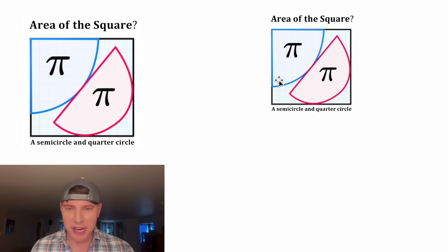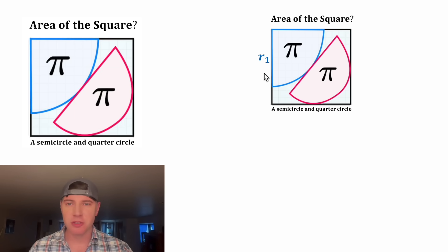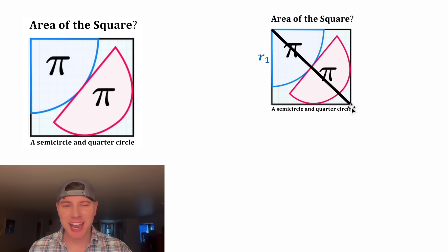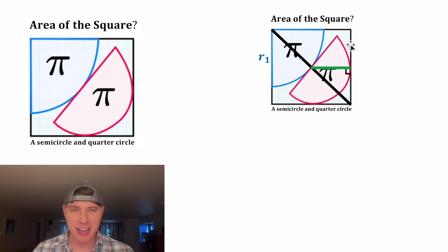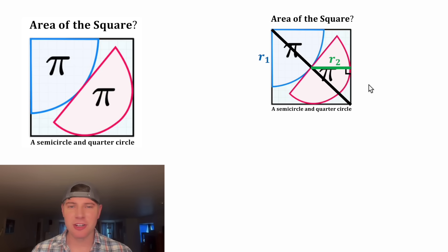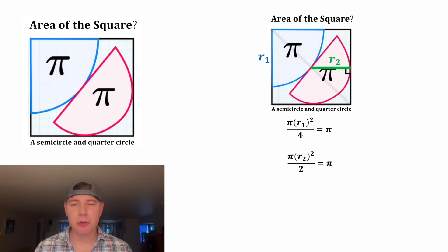Let's label the radius of the blue quarter circle R sub one. And let's construct the diagonal of the square. From this intersection point, let's draw this segment perpendicular to this side — and this will also be the radius of this semicircle. Let's call it R sub two. Now we can write some equations with our two radii.